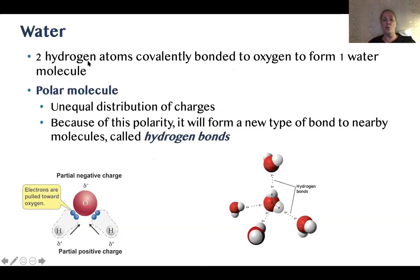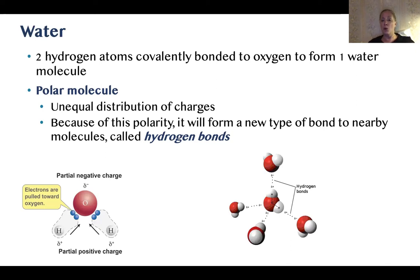In water, two hydrogen atoms are covalently bonded to oxygen forming the water molecule. It's a polar molecule with an unequal distribution of charges. Because of this, it forms a new type of bond at these partially charged sites, called a hydrogen bond. It's not actually a formal bond — it's more of a loose association — but chemists have traditionally called it a hydrogen bond.